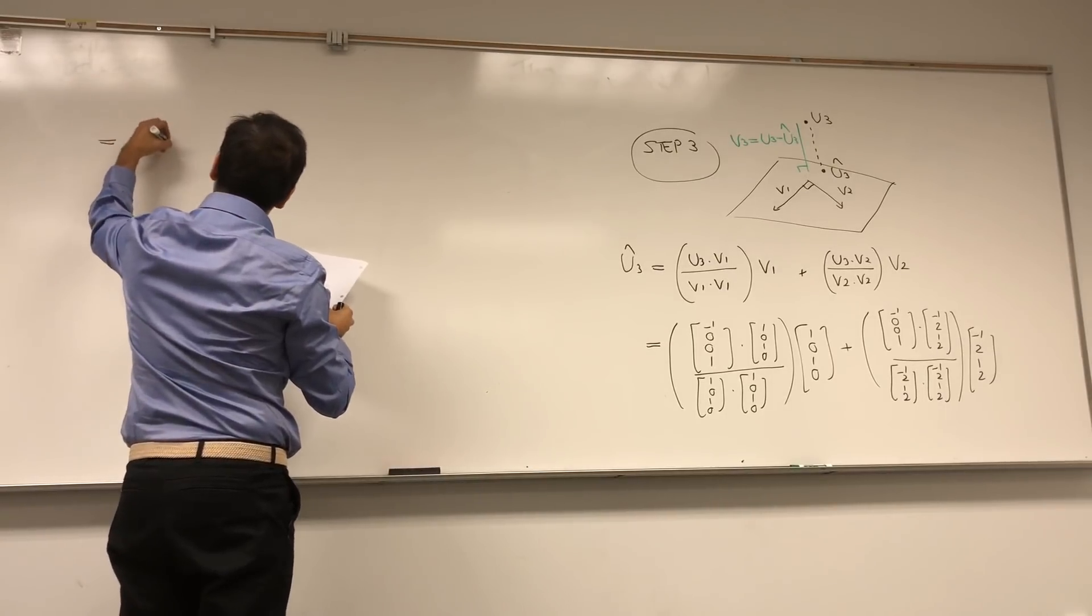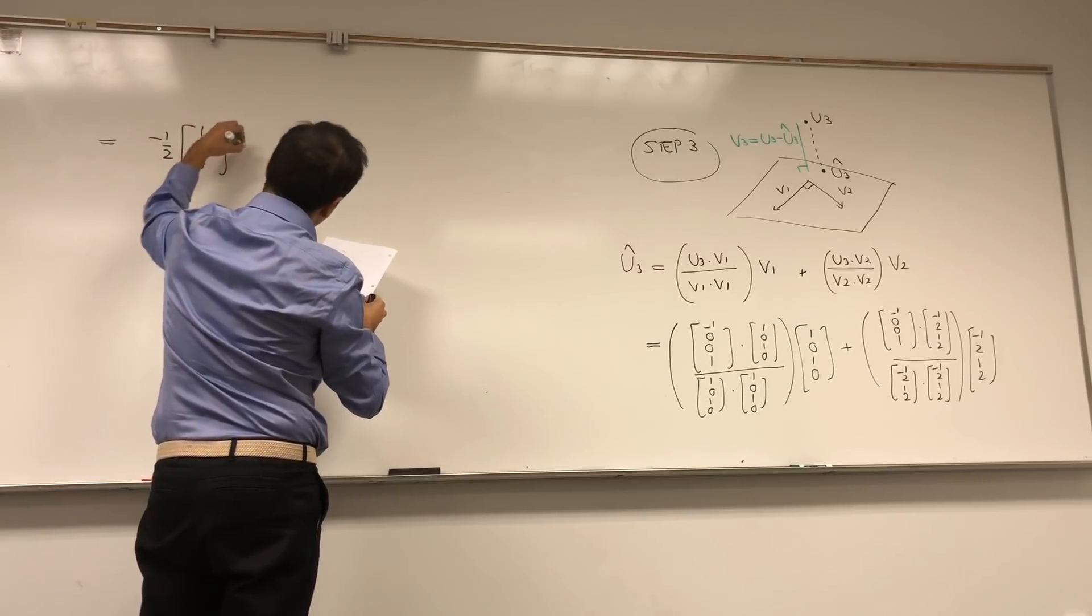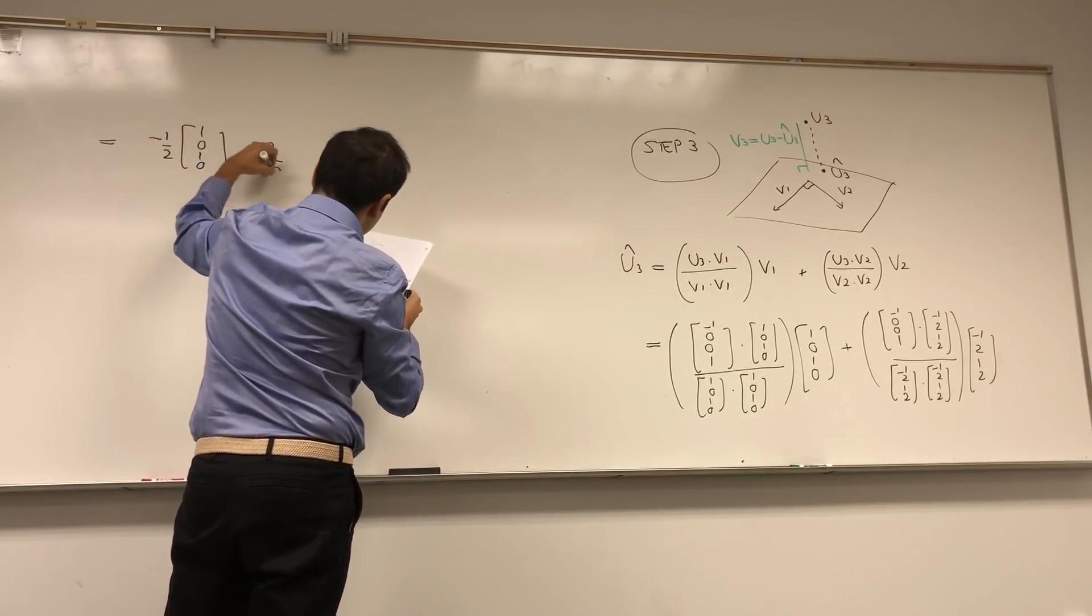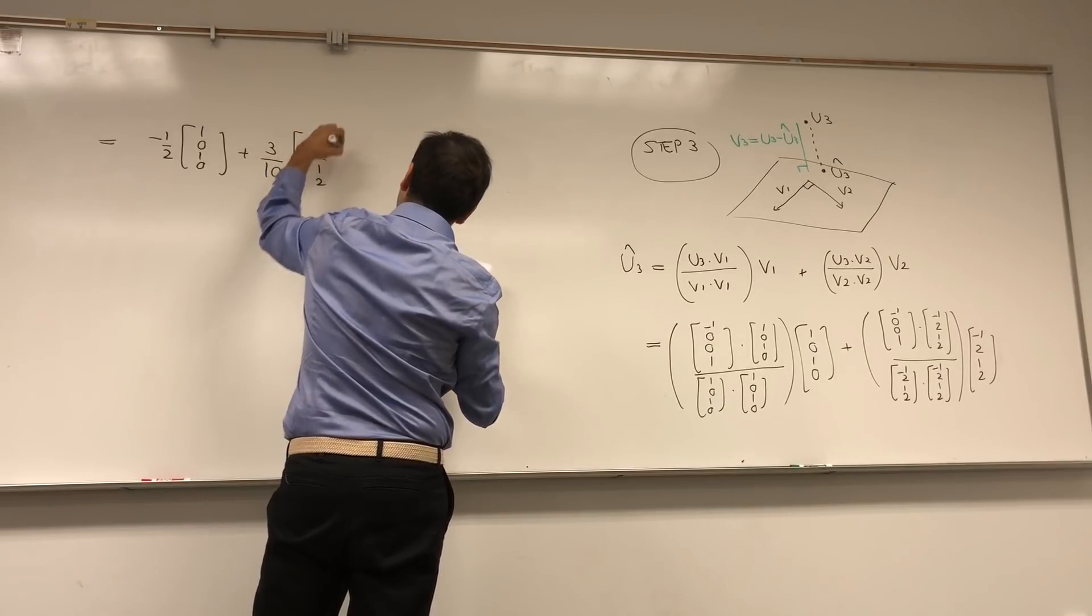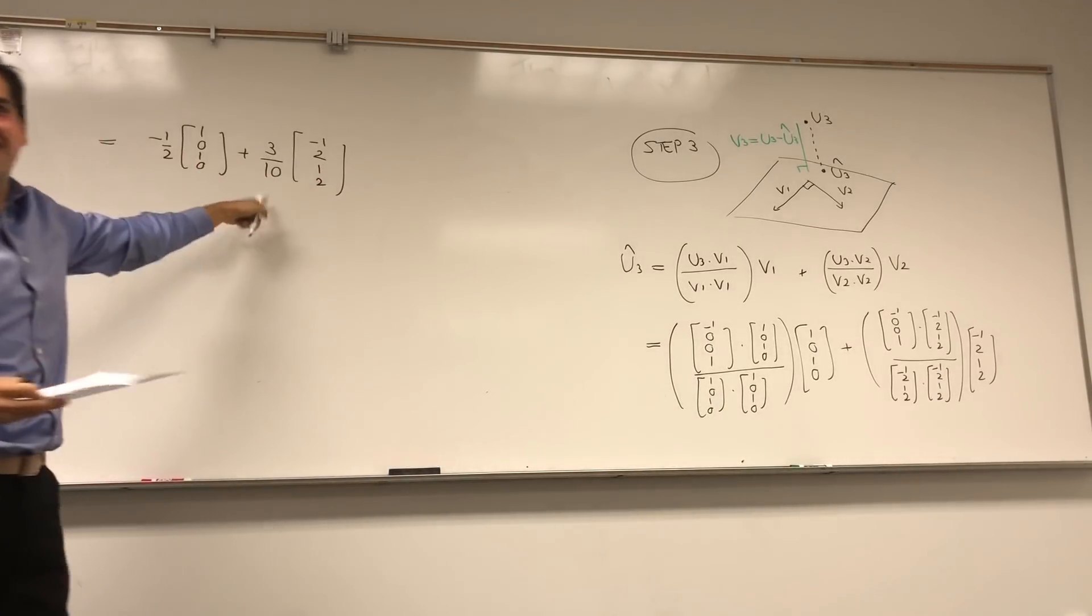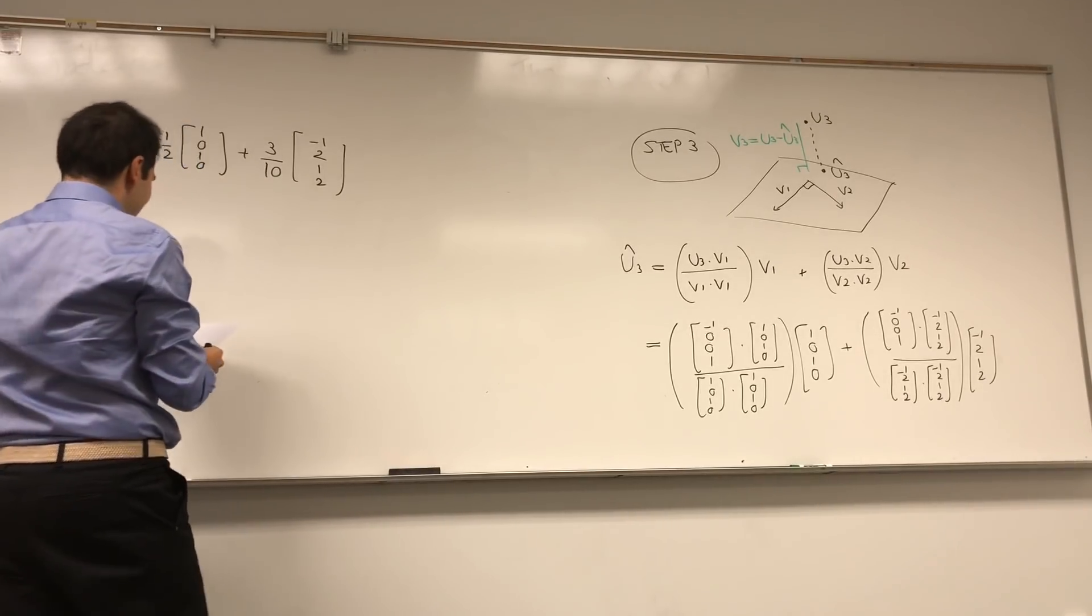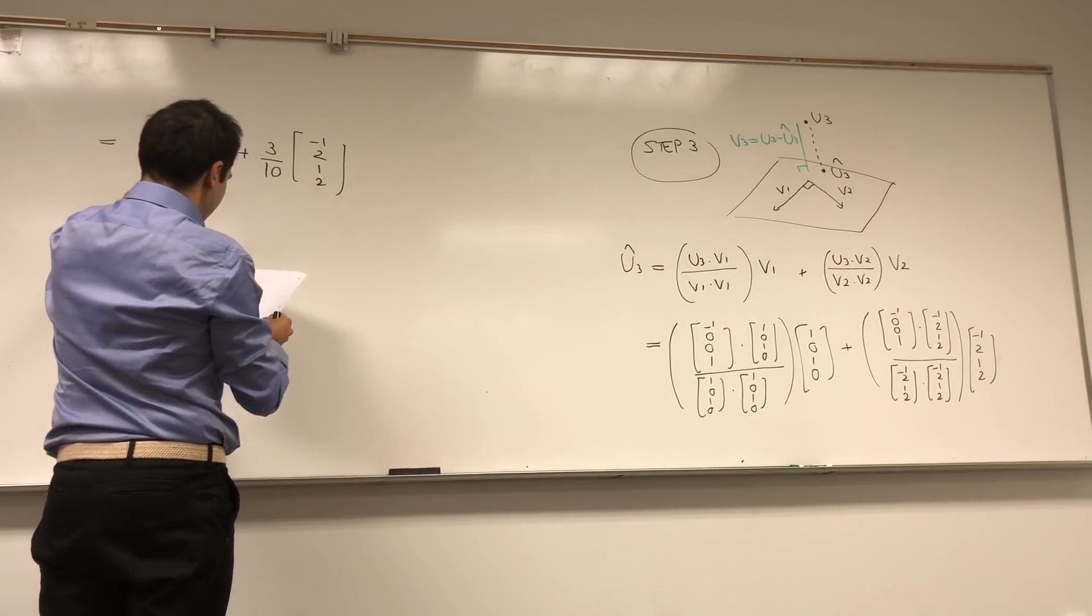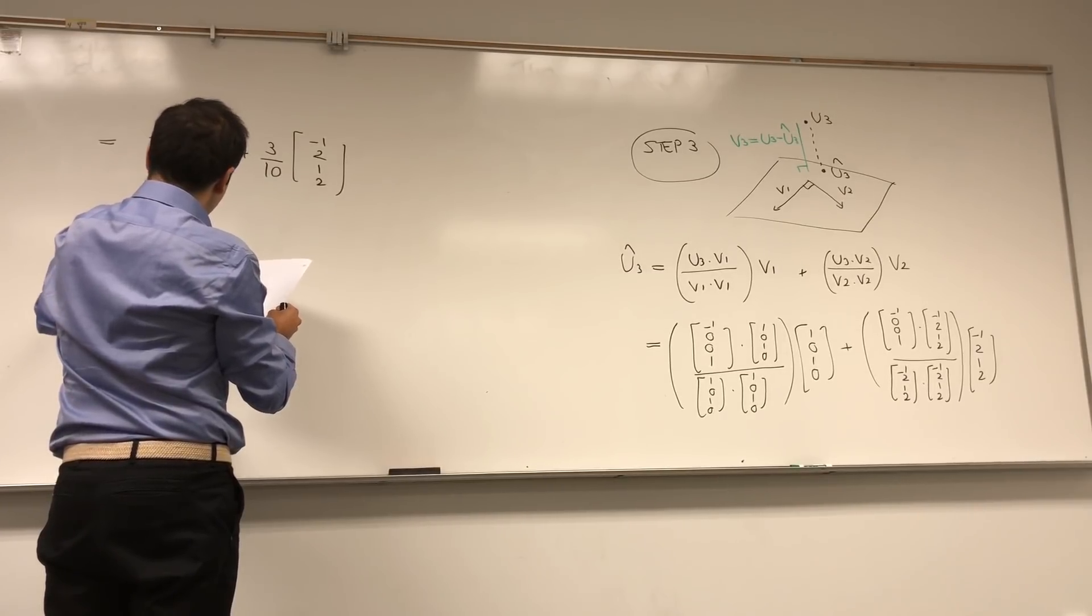Let's do this nasty calculation. We have minus 1, 0, 0, 1 dotted with 1, 0, 1, 0 over 1, 0, 1, 0 dotted with 1, 0, 1, 0, times 1, 0, 1, 0, plus minus 1, 0, 0, 1 dotted with minus 1, 2, 1, 2 over minus 1, 2, 1, 2 dotted with minus 1, 2, 1, 2, dotted with minus 1, 2, 1, 2. So by the way, you see how nice it is that I rescaled it—otherwise we would have nasty fractions. And then after the dust settles, we have minus 1 half times 1, 0, 1, 0 plus 3 tenths of minus 1, 2, 1, 2. It's very intense, right? Because we have 1 over 10. And in the end, you get minus 4 fifths, 3 fifths, minus 1 fifths, and 3 fifths.